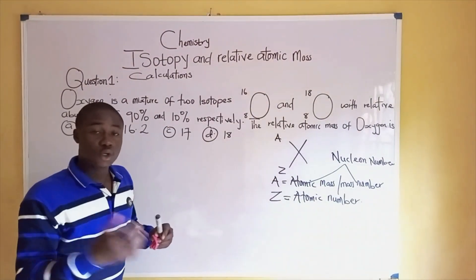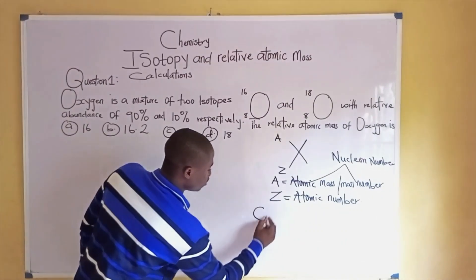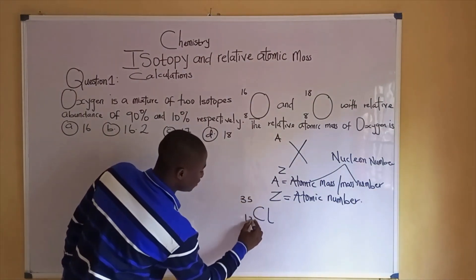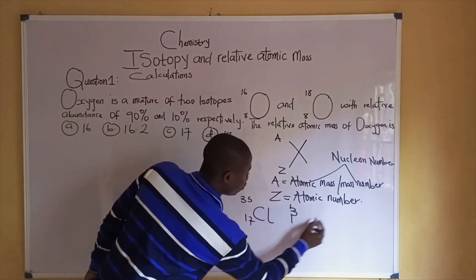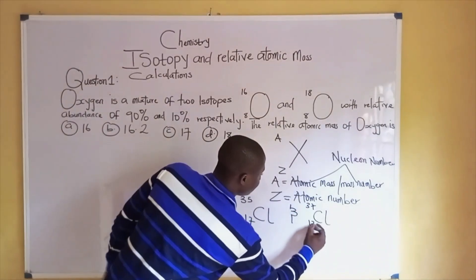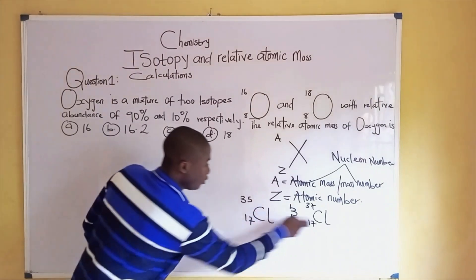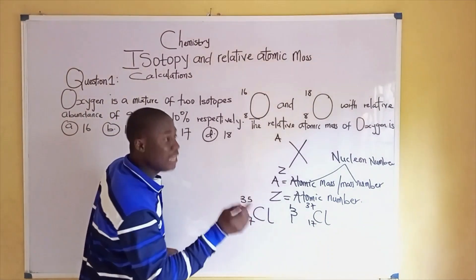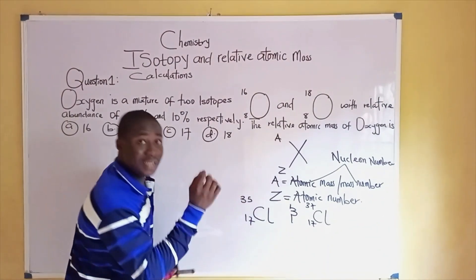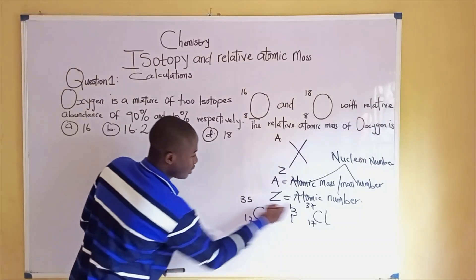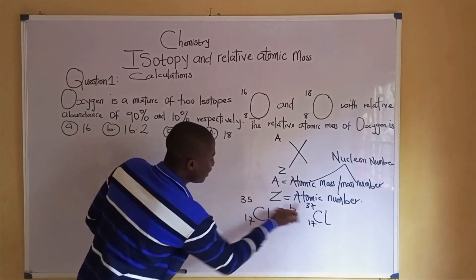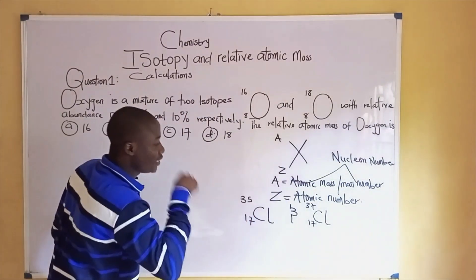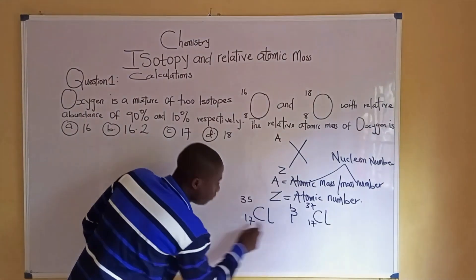Isotopy is a phenomenon whereby atoms of the same element — for example, this is chlorine — have different mass numbers. So chlorine-35 with atomic number 17, and chlorine-37 with atomic number 17. The mass numbers are different, but they have the same atomic number, which is 17.